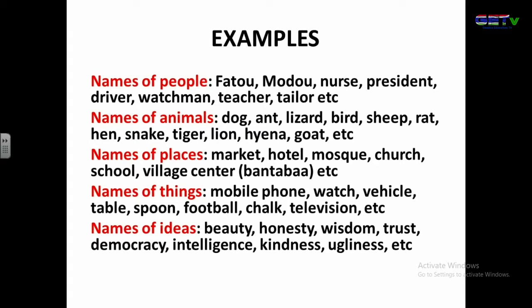We also look at names of animals. Examples include dog, ant, lizard, bird, sheep, rat, hen, insect, tiger, lion, etc. You can say 'the dog chased the rat.' In that case, dog is a noun and rat is also a noun.